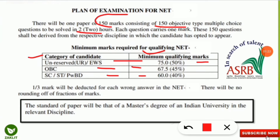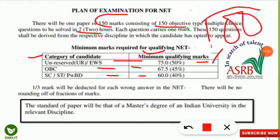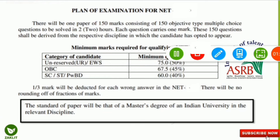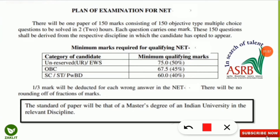So how many questions should you attempt? For the unreserved and EWS category, the minimum questions you should attempt is 100. You should attempt at least 100 questions because you need to get at least 75 marks and there is negative marking — one-third mark will be deducted. So if some questions from those 100 are wrong, you will still be able to get the minimum qualifying marks of 75. For OBC category, minimum attempt 90 questions, and for SC/ST/PWBD category, minimum attempt 80 to 85 questions.